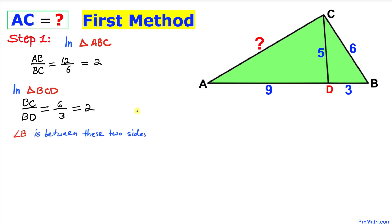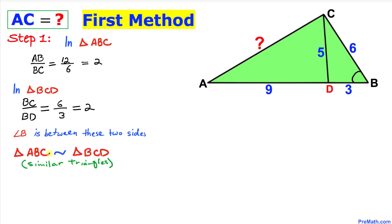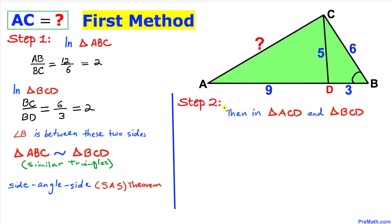Moreover, in both triangles the angle between these two side lengths is angle B. Therefore we conclude that triangles ABC and triangle BCD are similar triangles according to the Side-Angle-Side theorem.